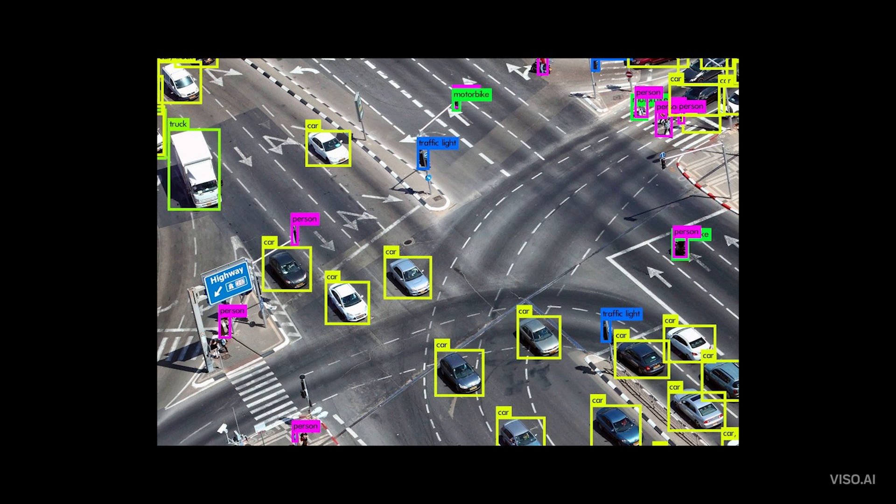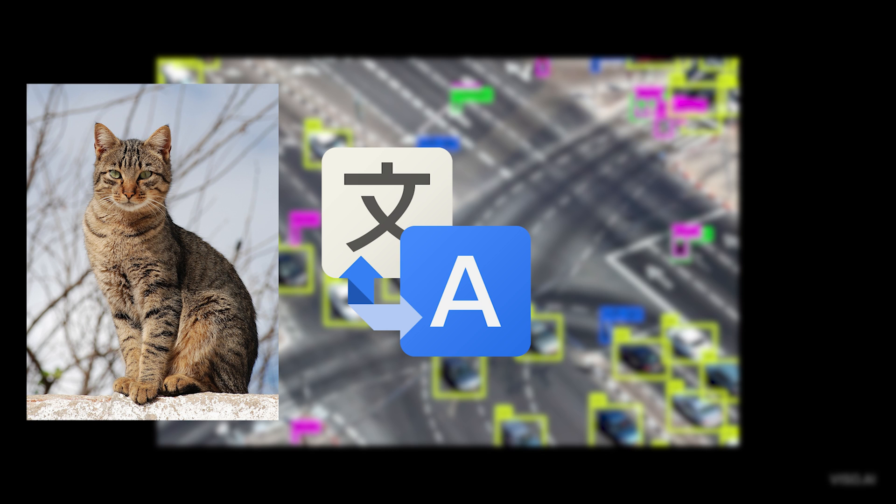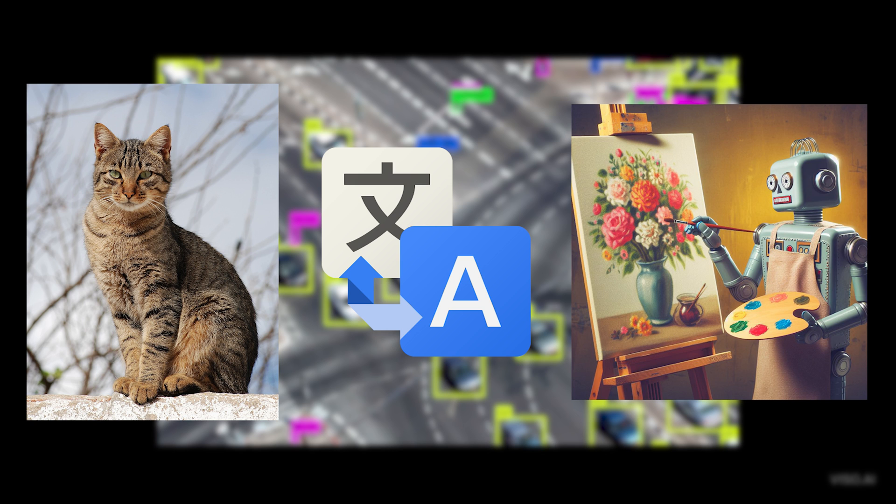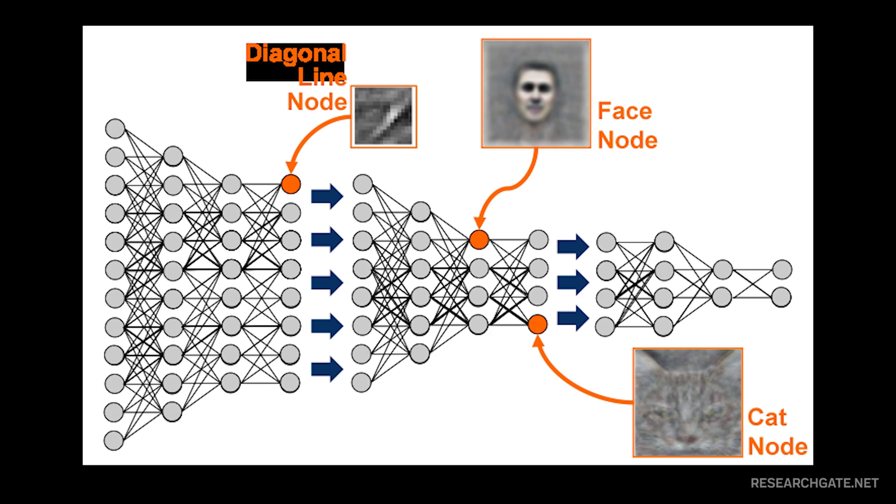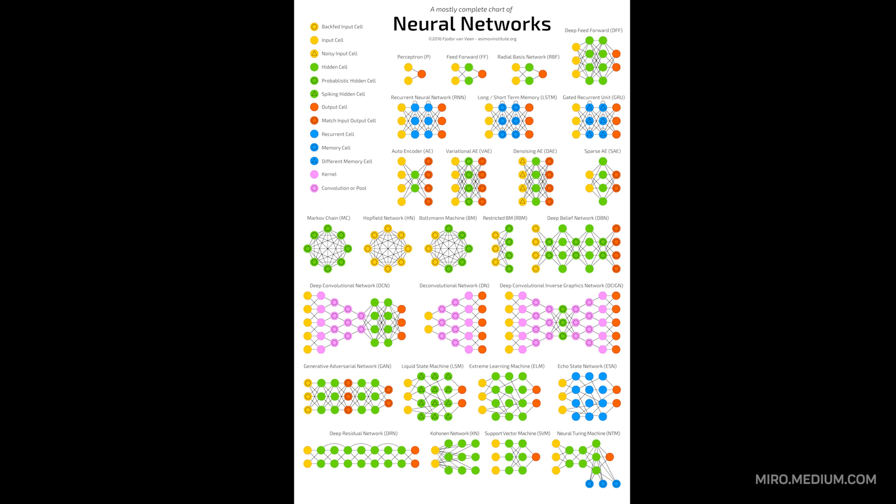What makes neural networks powerful is their ability to find patterns in massive amounts of data that humans might miss. They can learn to recognize cats in images, translate languages, or even generate art – all by finding and understanding complex patterns in data. The deeper the network, meaning the more layers it has, the more sophisticated patterns it can learn.